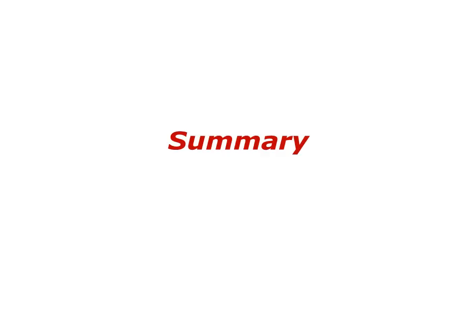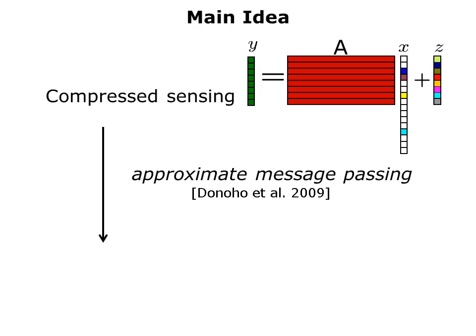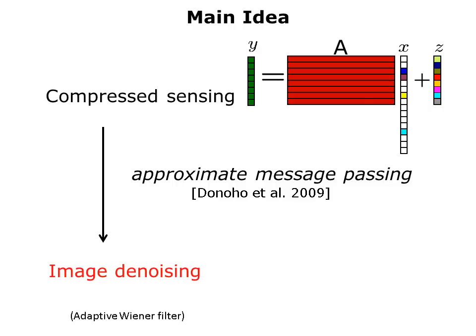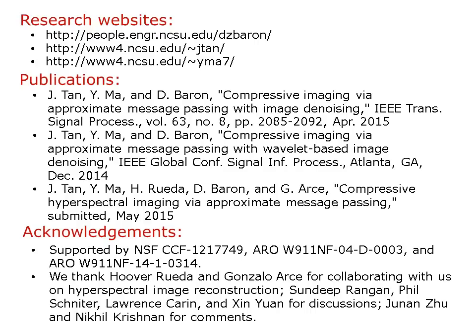Having discussed the 2D and 3D image denoisers, we can summarize. The main idea is that we had an inverse problem — a compressed sensing problem — and we applied the approximate message passing approach to map it into an image denoising problem. We then developed two types of adaptive Wiener filters: one for the 2D image case, and the other for 3D hyperspectral cubes. We'd like to conclude with information listing our research websites, our publications, and acknowledgments. Thank you for your attention.